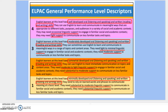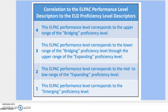That is going to be a change for us in the next coming months that we need to learn. In ELPAC, a four means that it's at the bridging proficiency level. A three means that it's at the expanding and early bridging level. A two is the expanding level and a one is an emerging level.